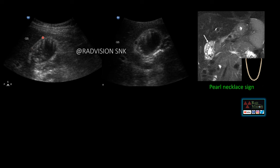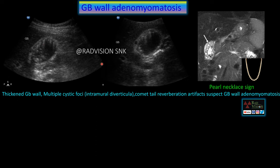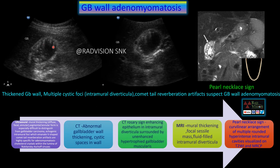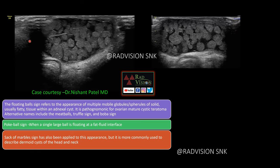Next case: you can see thickening of the gallbladder wall, multiple cystic spaces within the GB wall, and multiple comet-tail reverberation artifacts from the GB wall — definitely suspect GB wall adenomyomatosis. These reverberation artifacts are due to cholesterol crystals deposited in the intramural cystic diverticula, or Rokitansky-Aschoff sinuses. On CT, the 'rosary sign' represents enhancing epithelium in the intramural diverticula surrounded by unenhanced hypertrophied gallbladder muscularis. On MRI T2-weighted images, multiple T2 hyperintense cystic lesions within the wall resemble a pearl necklace — the 'pearl necklace sign' in GB wall adenomyomatosis.